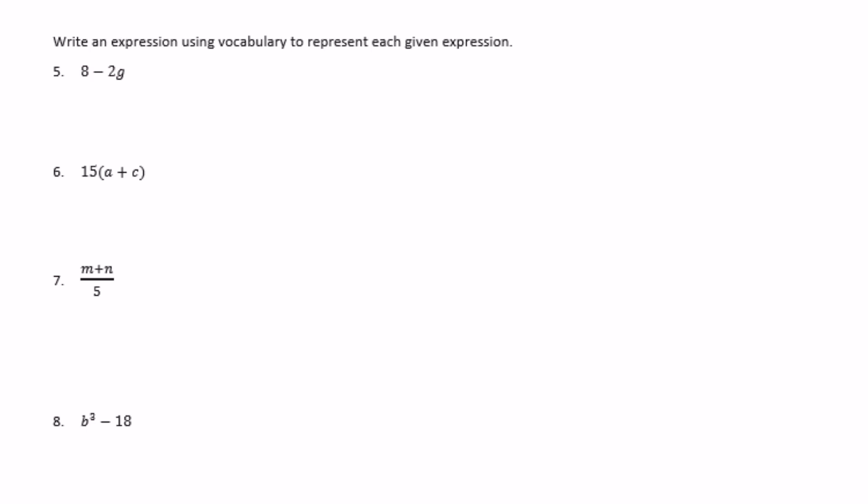Write an expression using vocabulary to represent each given expression. So we're just doing the same thing that we did at the beginning. So 5 says 8 minus 2g, so we could write 8 minus, but we can't just say 2g, we need to describe that a little bit more. So we could say the product of 2 and g. Let's do that. 8 minus the product of 2 and g.